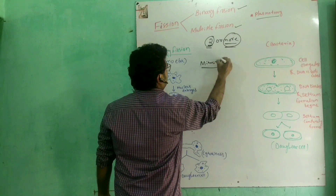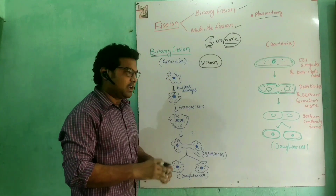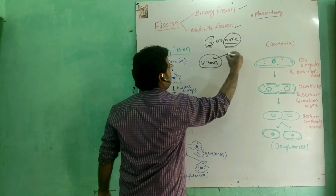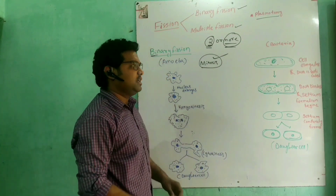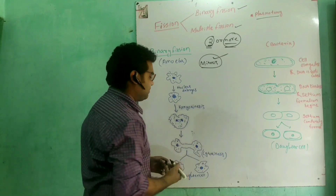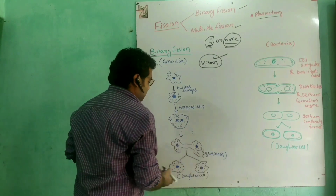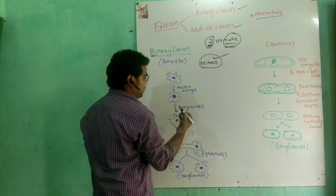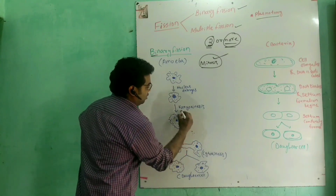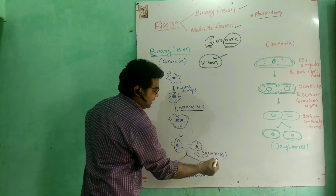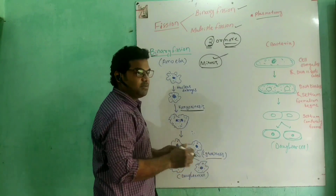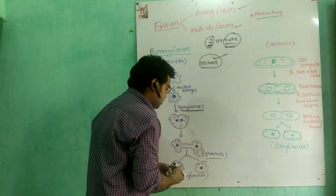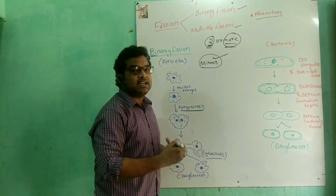What is mitosis? Mitosis has two components: first is karyokinesis, which is nucleus division, and second is cytokinesis, which means cytoplasmic division.